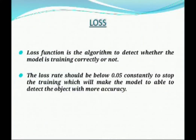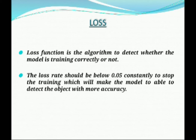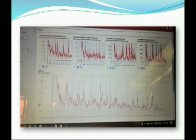I am Rishav Jaiswal and from now I will convey the slides. Loss function is the algorithm to detect whether the model is training correctly or not. The loss rate of the model should be below 0.05 constantly to stop the training, which will make the model more accurate to detect the object. In the graph, we stopped training the model when the graph value was between 0 and 0.2, and thus we can verify whether our model is accurate.